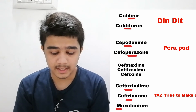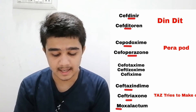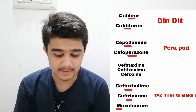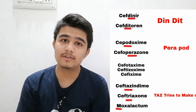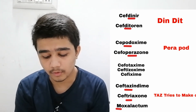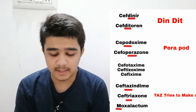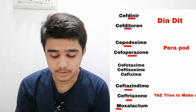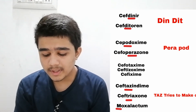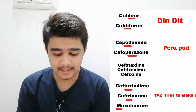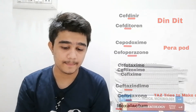Drugs containing 'XIME' in their name — there's no mnemonic for those, you just have to remember: Cefotaxime, Ceftizoxime, and Cefixime. For the remaining drugs, the mnemonic is 'TAS tries to make coffee': 'TAS' means Ceftazidime, 'TRIES' means Ceftriaxone, 'make' means Moxalactam, and 'coffee' is a placeholder with no drug.